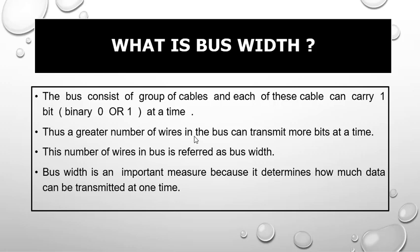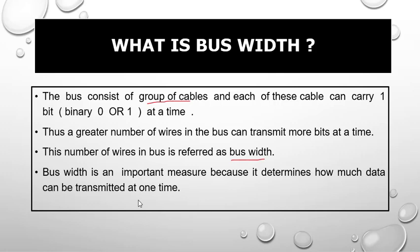What is bus width? The bus consists of a group of cables. Each wire in the bus is able to carry one signal — that is, zero or one — at a time. One cable can transfer one bit at a time. Thus, a greater number of wires in the bus can transmit more bits at a time. If there exist multiple wires in the bus, it means that it can transfer multiple bits at a time. More number of wires in the bus means more bits can be transferred in a single time. This number of wires in the bus is referred to as bus width. Bus width is an important measure because it determines how much data can be transferred at a time.